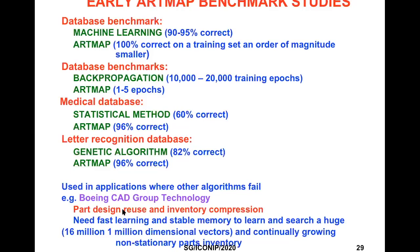To do that, you needed fast learning and stable memory to learn and search a huge and continually growing non-stationary parts inventory. At the time of this application, there were already 16 million one-million-dimensional vectors describing each of the parts, and you had to be able to quickly search the inventory to find a part to use in a new plane. Finding a similar part in the inventory and slightly modifying the design could save millions of dollars in fabrication costs.